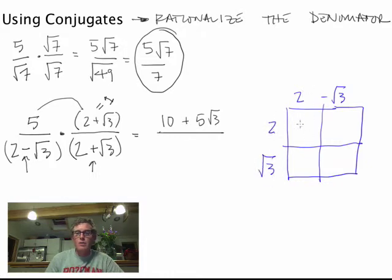Okay, so I'm going to do 2 times 2, there's 4. 2 times negative root 3 is negative 2 root 3, and 2 times root 3 is 2 root 3, and then 3 times negative root 3, well, that just gives me negative 3.